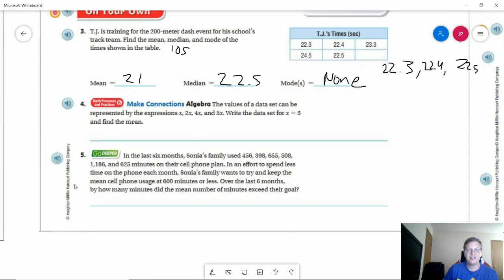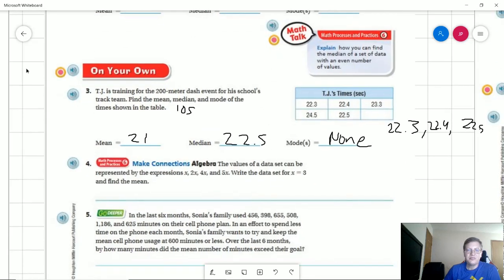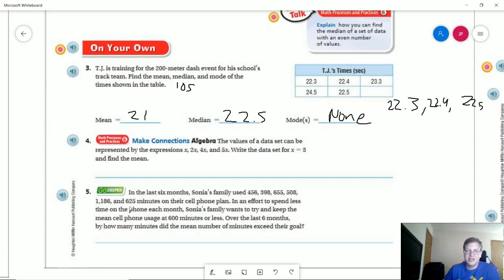So I'm going to grab that. Number five, I don't always do word problems. So one of the things that you'll notice from my videos is I sometimes count the word problems as part of the kind of problem solving questions. I will do this one. So if we want to try to keep the mean cell phone usage at 600 minutes or less, how many minutes did the mean number of minutes exceed the goal? So our mean is going to be the total of all of these months divided by the number of months. So if you need to go ahead and pause, I am actually going to cheat and use my calculator real quick because I did not pre-plan this one and I don't want you to have to wait for me to go ahead and do this part in my head.